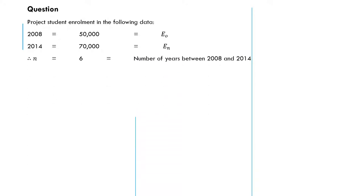So let's look at the question here. Project student enrollment in the following data. We have 2008 with 50,000 students enrolled. That is the base year. Then you have 2014 with 70,000 students enrolled. That is the current year. The n is the difference between the two years, 2014 minus 2008, which will give us 6.